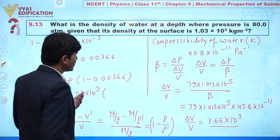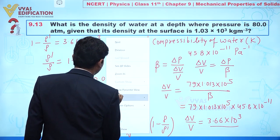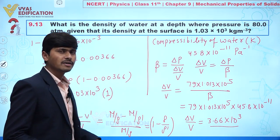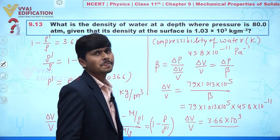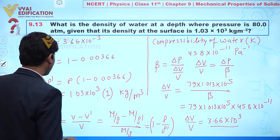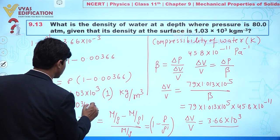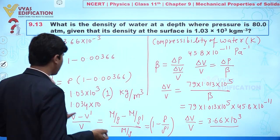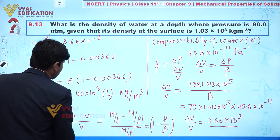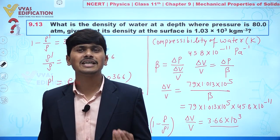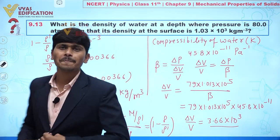With ρ = 1.03 × 10³ and multiplying by (1 − 0.00366), since 0.00366 is very small compared to 1, we can approximate this. Calculating directly gives ρ' ≈ 1.034 × 10³ kg/m³. So there is very little change in density at depth compared to the surface.